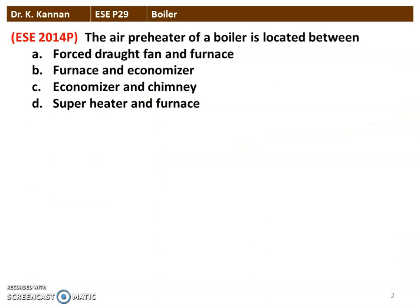First question from the 2014 question paper. The air preheater of a boiler is located between — we have four options: forced draught fan and the furnace; furnace and the economizer; economizer and the chimney; superheater and the furnace. The correct option is economizer and the chimney.